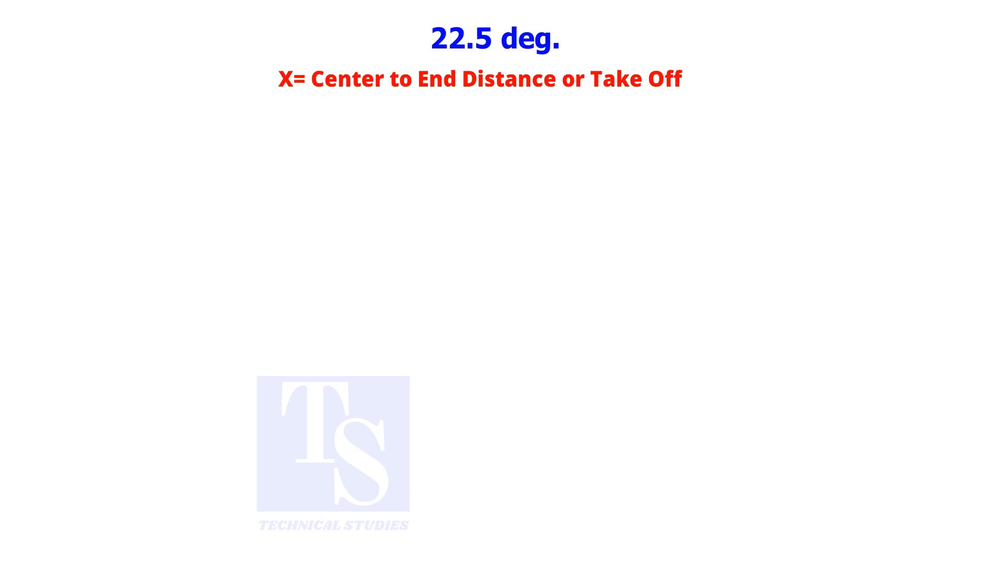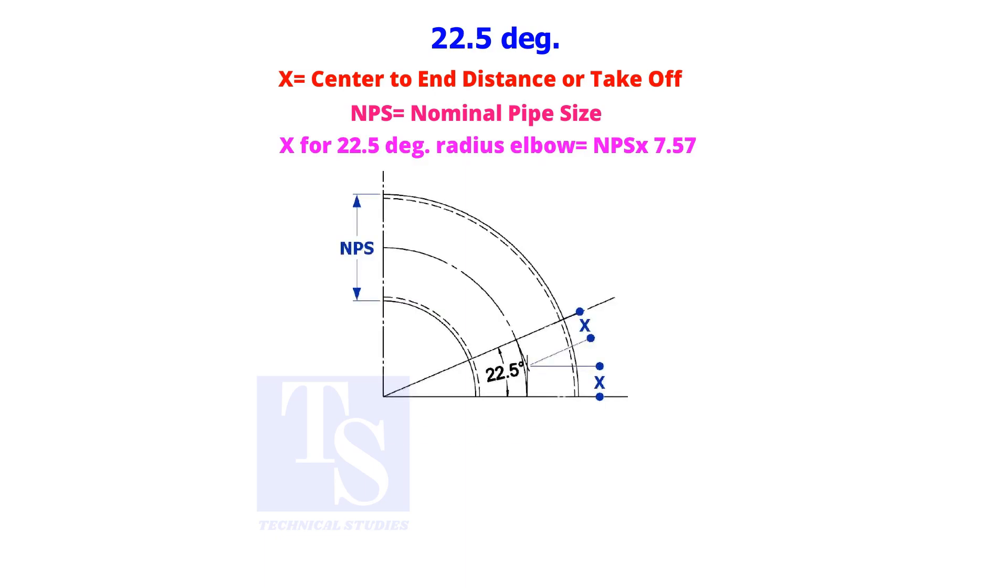Multiply the nominal pipe size by 7.57 to obtain the take-off of a 22.5 degree long radius elbow. Thank you for watching.